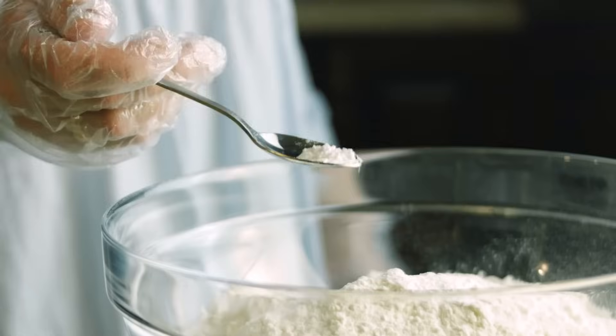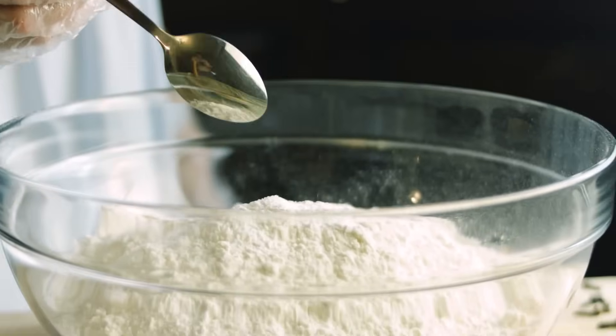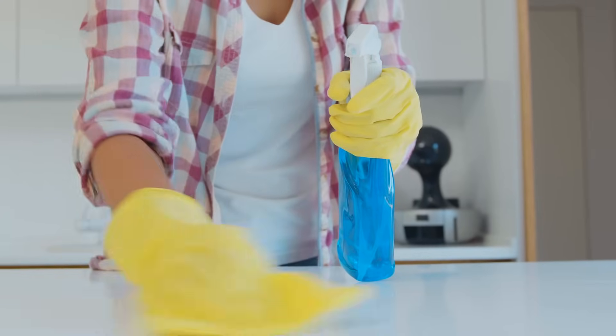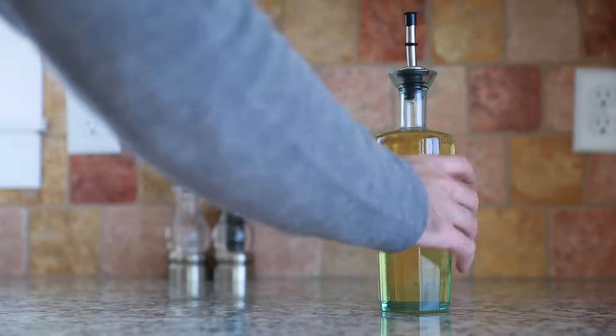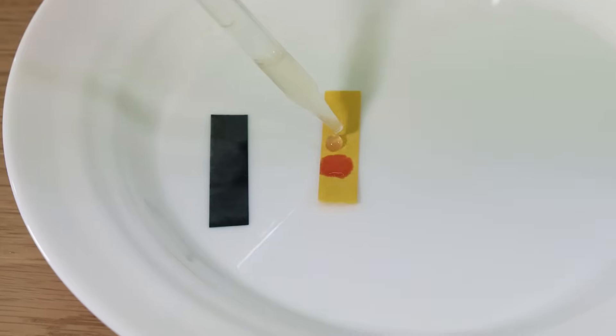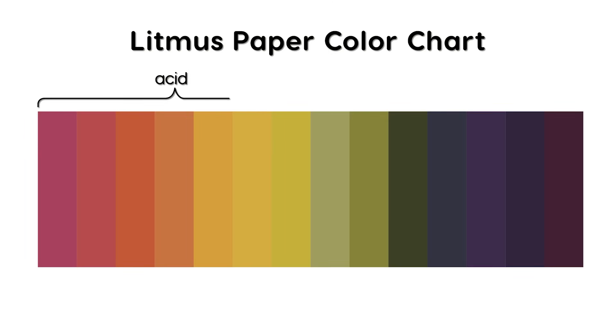In this experiment we will test the pH levels of four everyday substances using litmus paper. Litmus paper is a special type of paper that changes color when exposed to acidic or basic solutions. Let's see whether our selected substances are acids or bases.